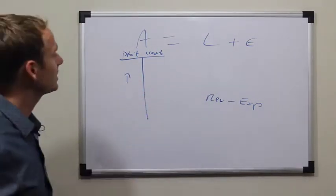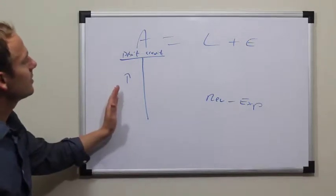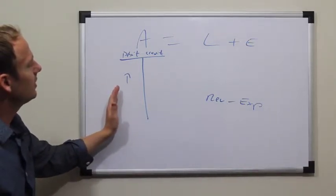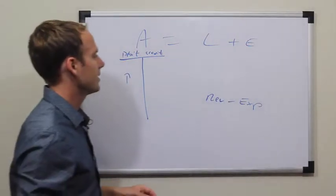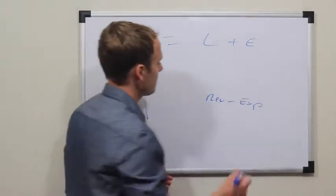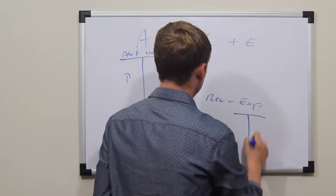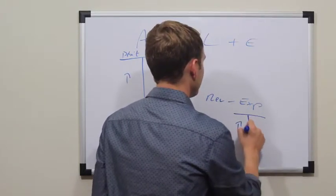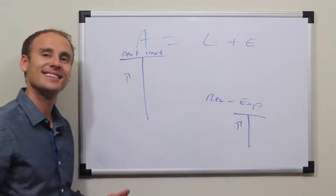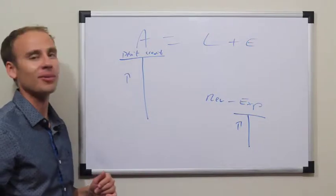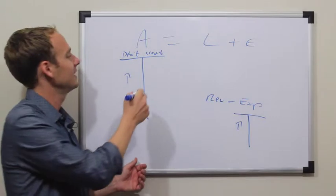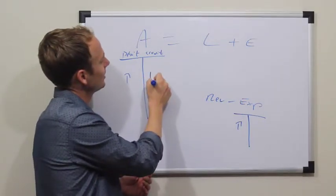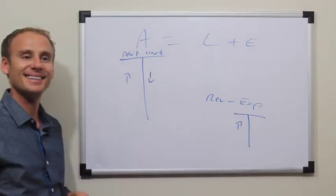Assets equals liabilities plus equity. Debits increase with assets, and just a little secret, it's the same for expenses. Just want to put that there so there's a frame of reference. Increase assets with a debit, decrease with a credit.